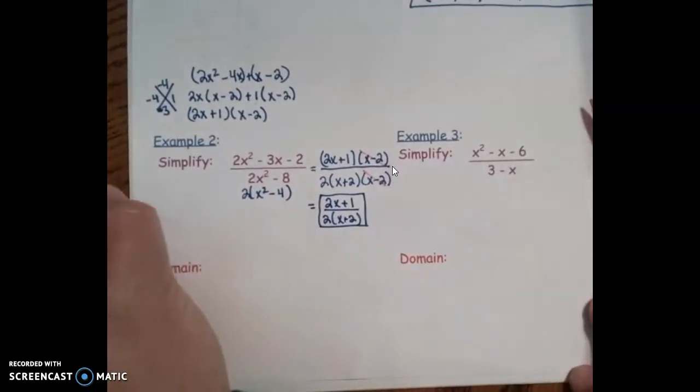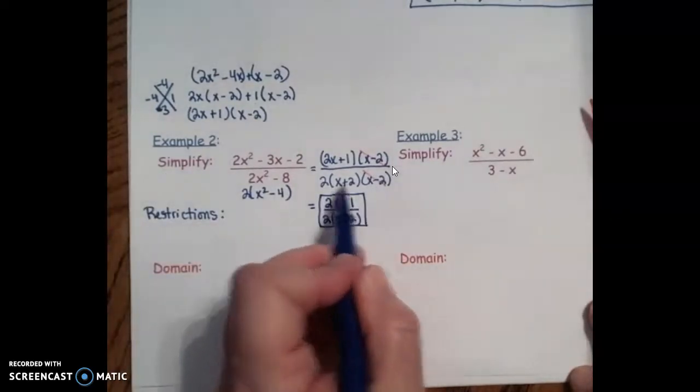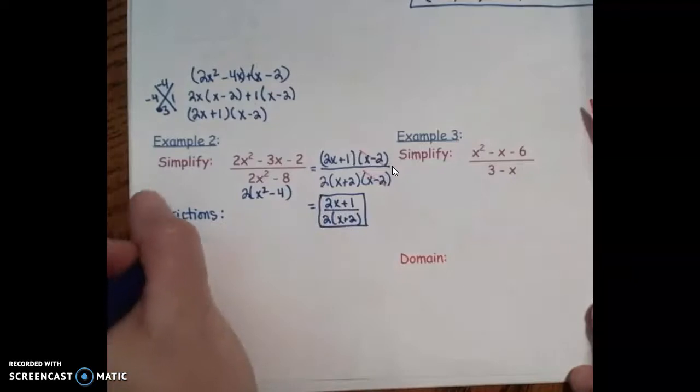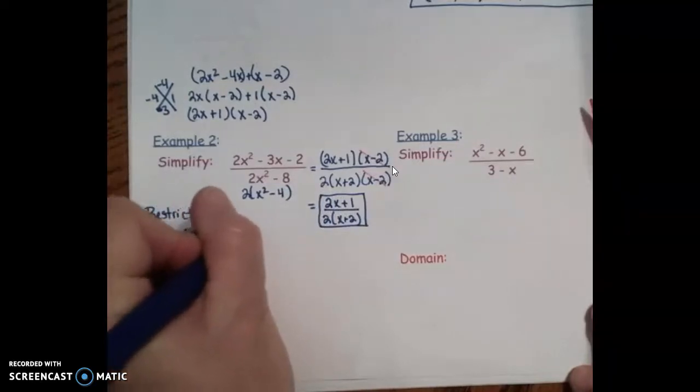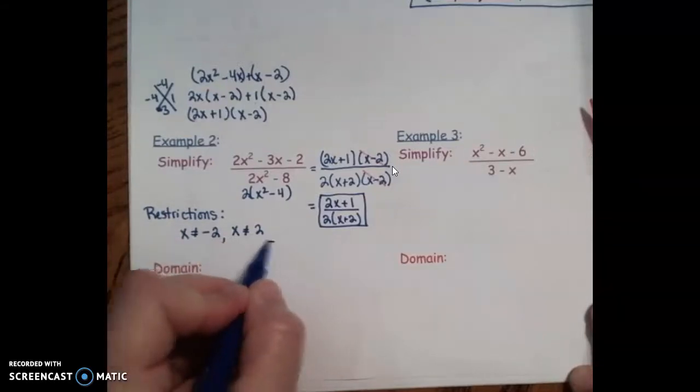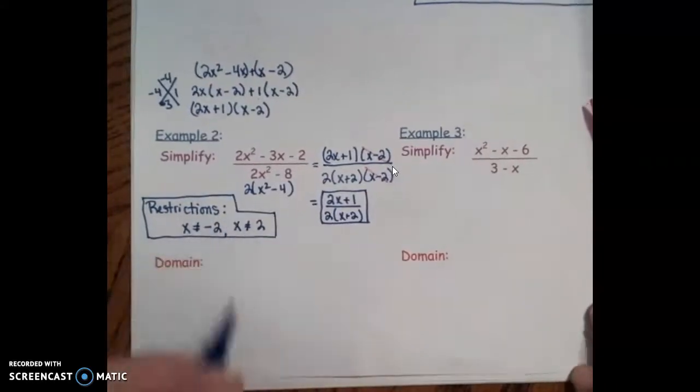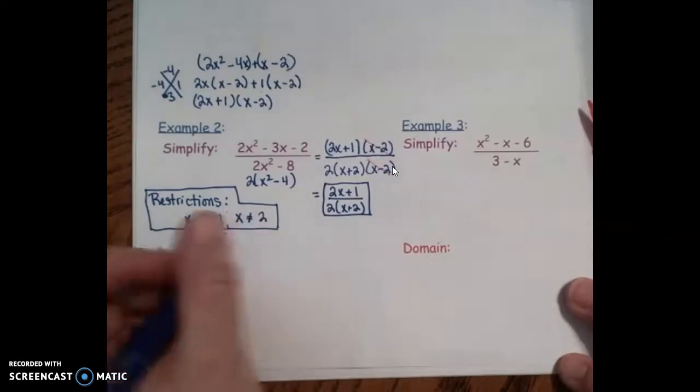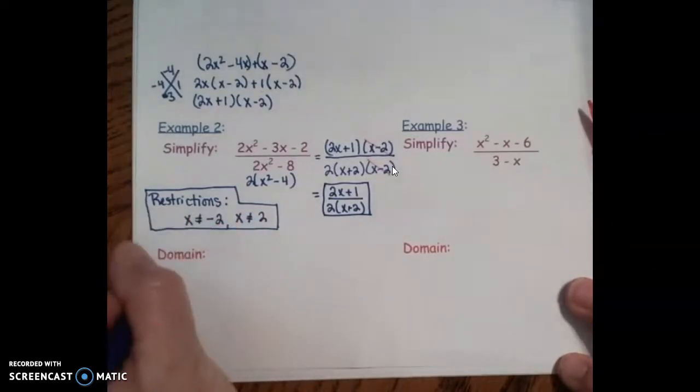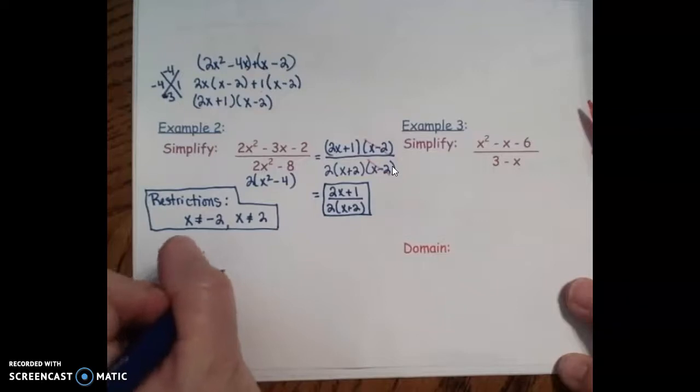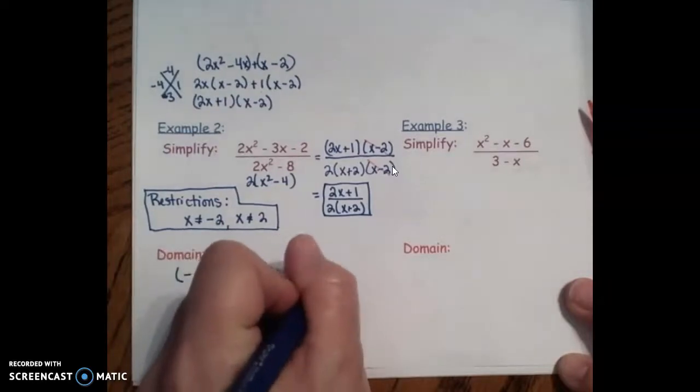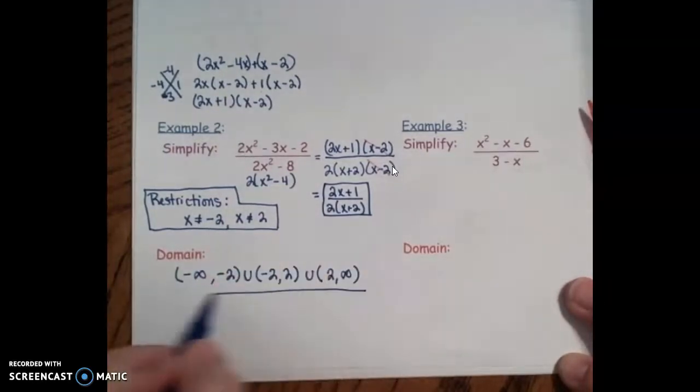Let's look for our restrictions. So factored form, denominator only is what you need to consider. So again, x cannot equal negative 2, x cannot equal positive 2. So there's our restrictions. If the number line helps you do that, but eventually you'll get to the point you should be able to think about that. So from negative infinity to negative 2, and negative 2 to positive 2, and positive 2 to infinity would be our domain.